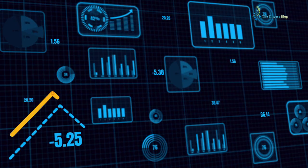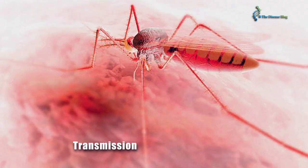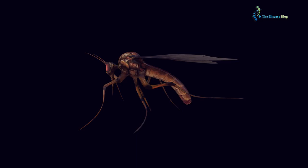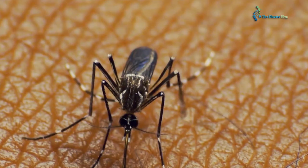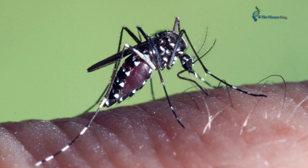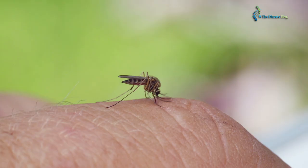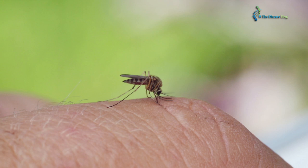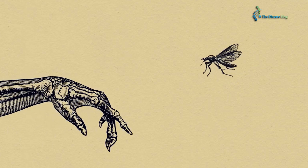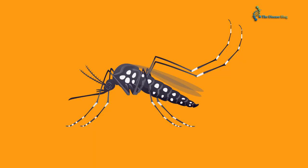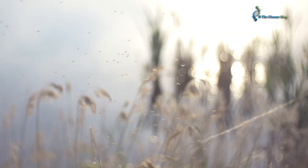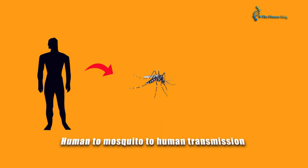Transmission of dengue fever virus: A female mosquito, Aedes aegypti, serves as an essential vector in the transmission of the dengue fever virus from person to person. Some other species also spread this viral disease at a limited rate, such as Aedes albopictus, Aedes polynesiensis, and Aedes scutellaris. These species also transmit Zika and chikungunya viruses. Humans and other mammals serve as primary hosts. Aedes aegypti can be differentiated from other mosquitoes by its small dark body with white dots. These mosquitoes prefer warm climates and dwell near humans.